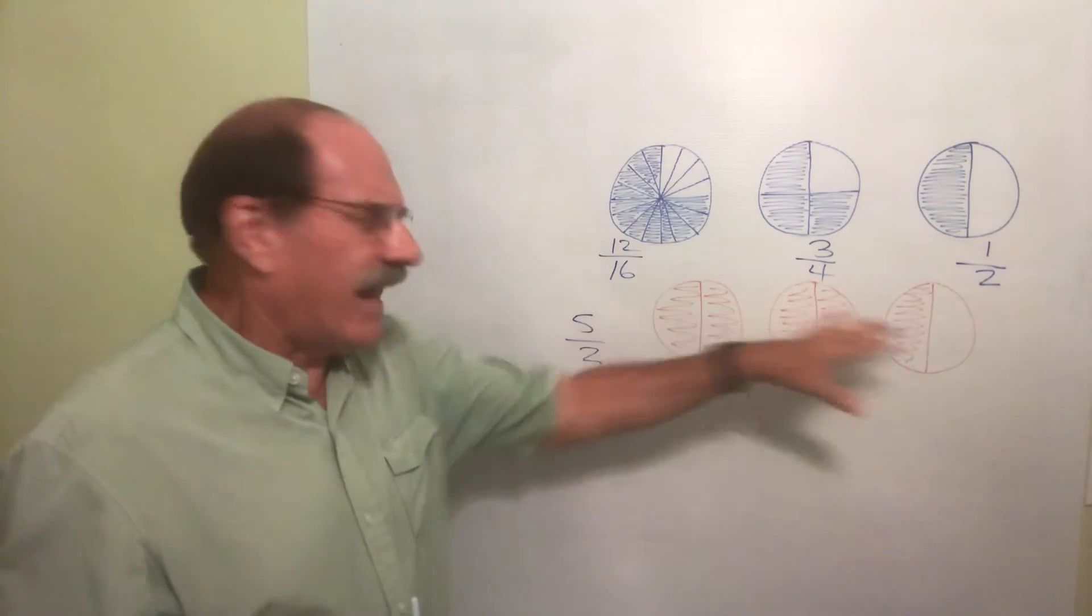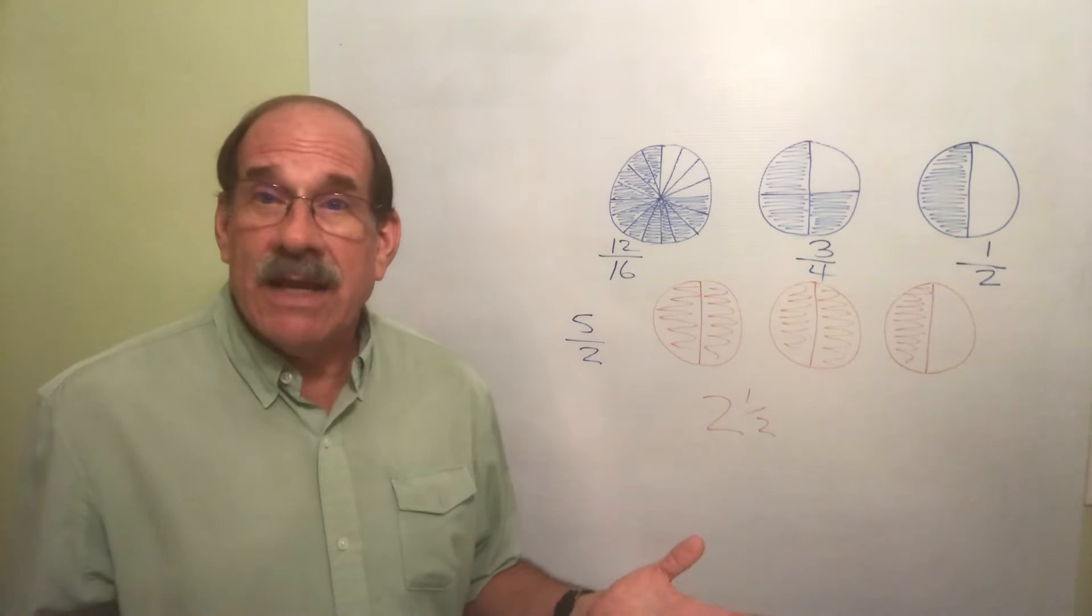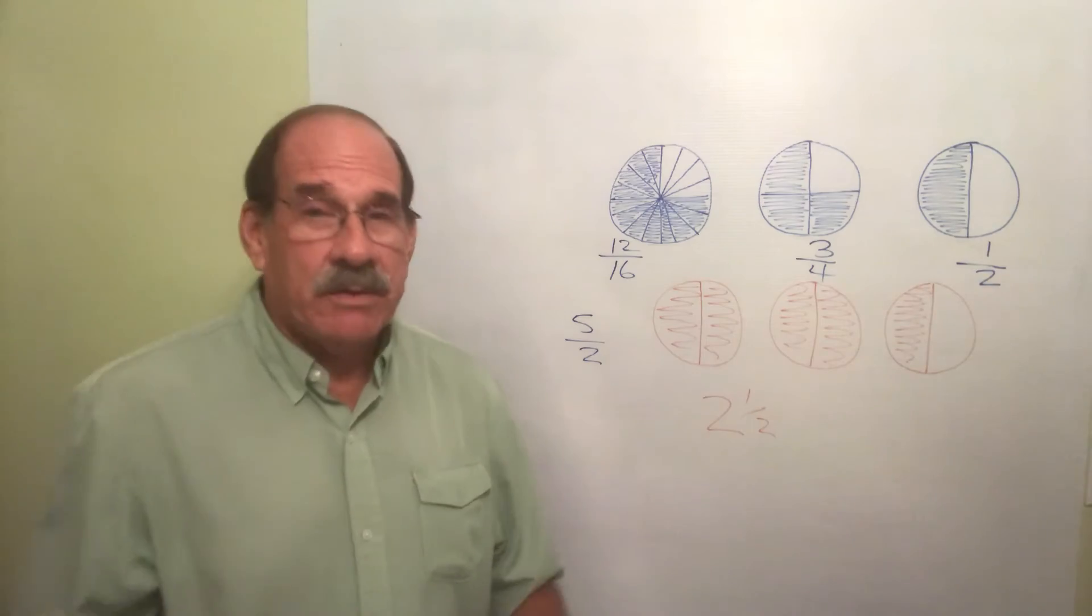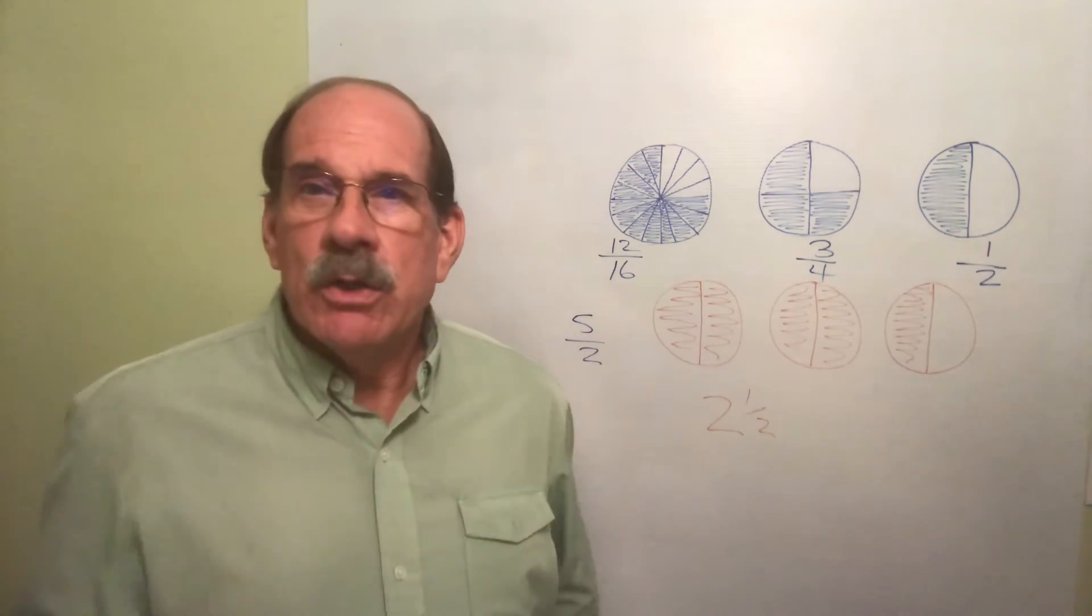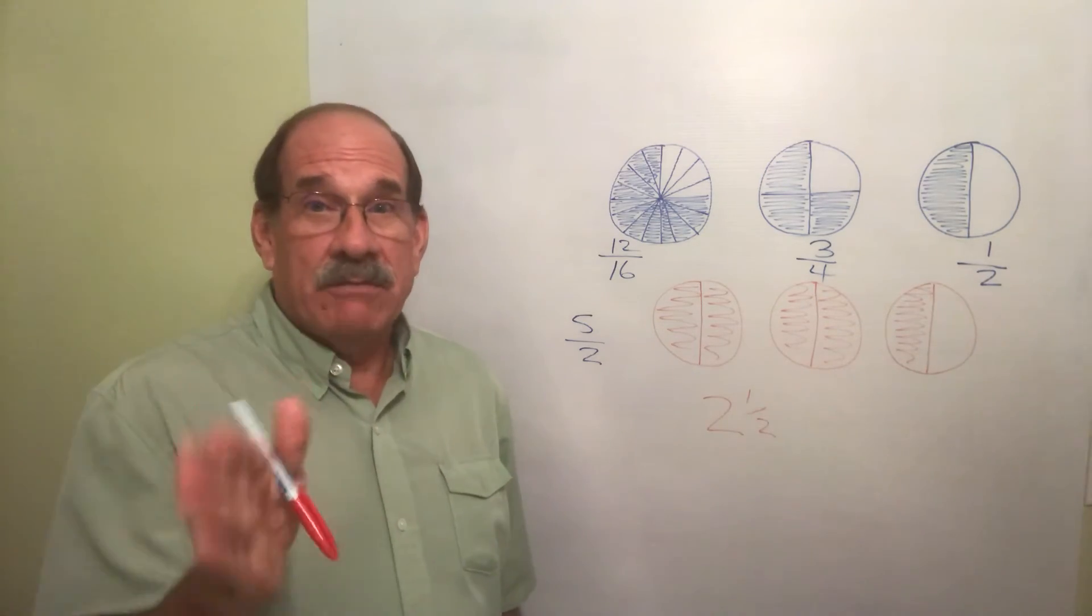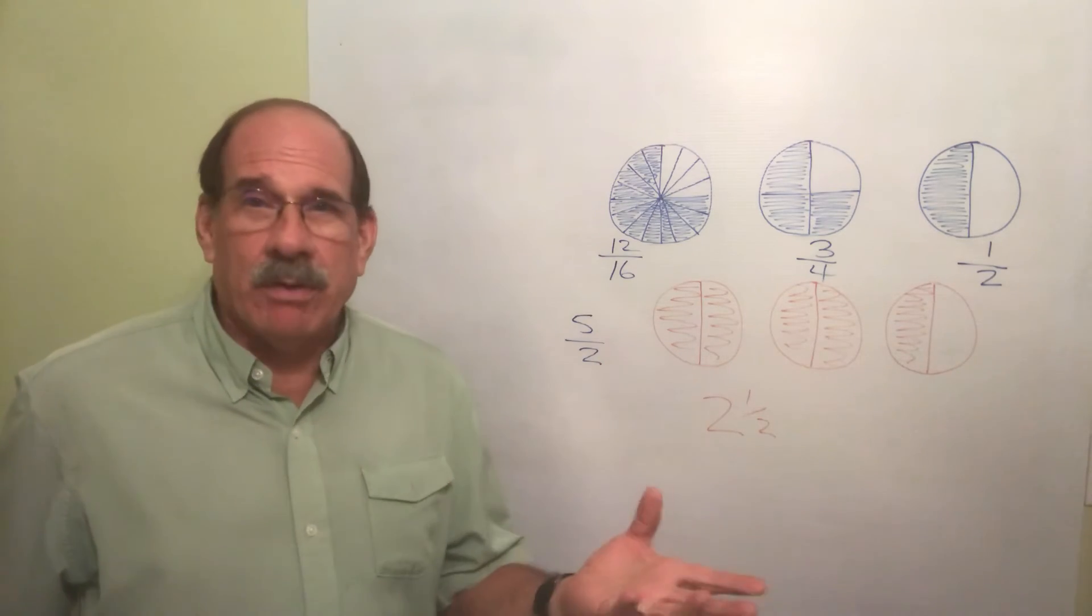That's a better way to write this - five halves or two and a half, that's the same thing. Now we're gonna learn something - there'll be some 'always you better do this every single time' rules. Here's one: if your answer to some math problem ends up being an improper fraction, you need to convert that into a mixed number.